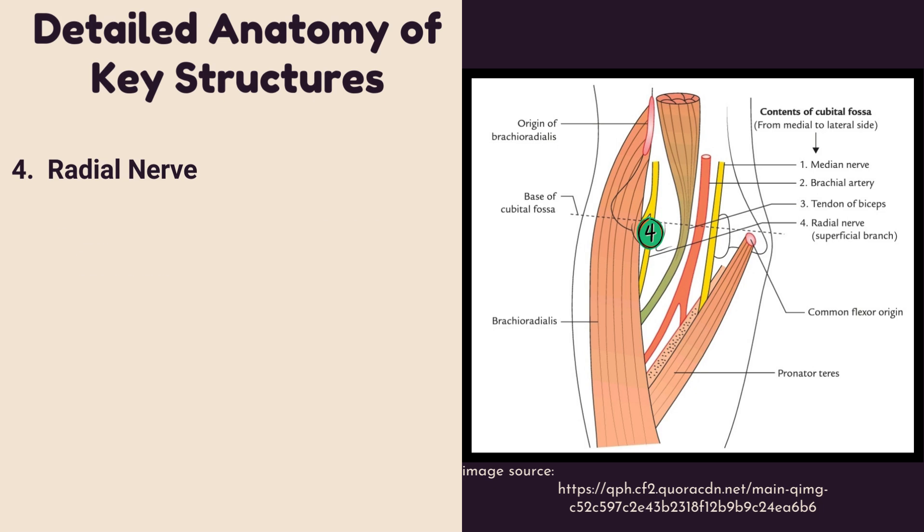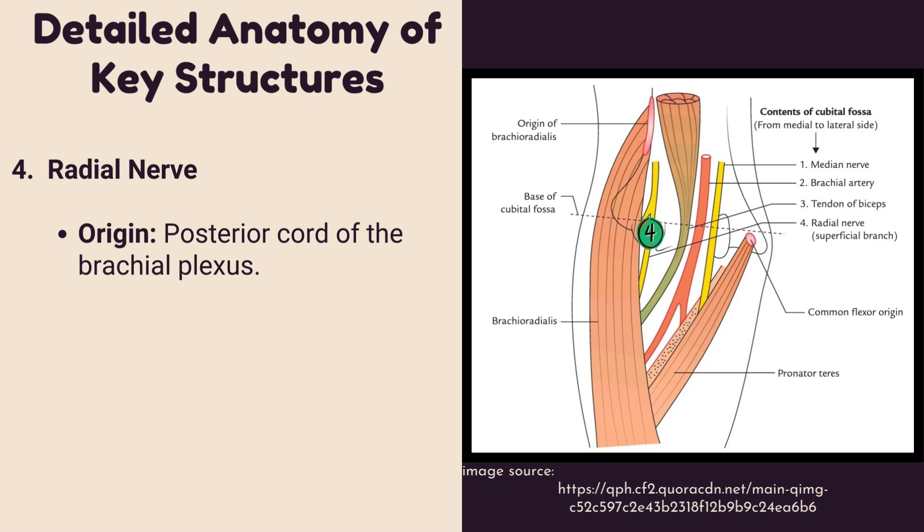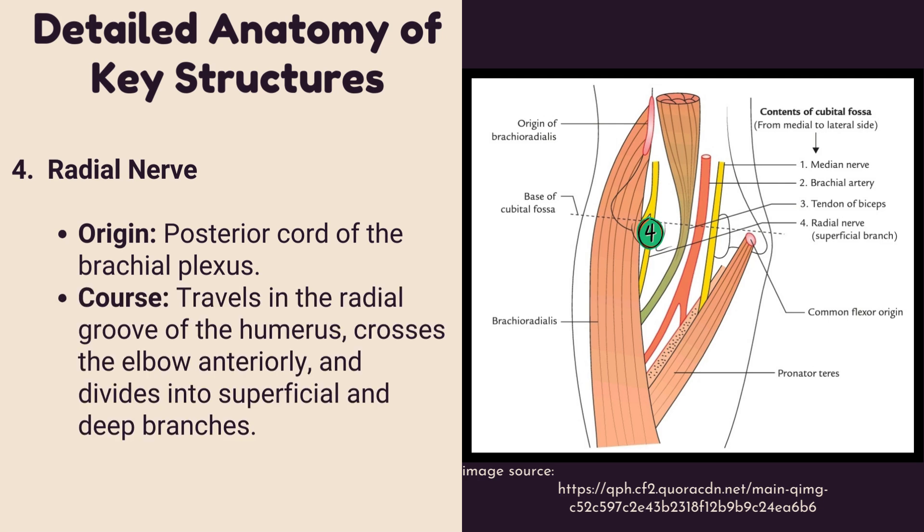The radial nerve — origin: it is made of the posterior cord of the brachial plexus. Course: it travels in the radial groove of the humerus, crosses the elbow anteriorly, and divides into superficial and deep branches.